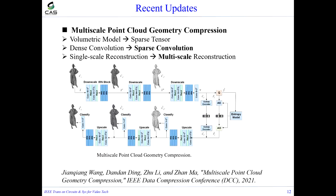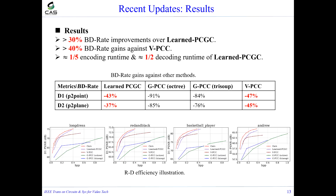Recently, we updated the learned PCGC and proposed a better method called multi-scale PCGC, accepted at the Data Compression Conference. We made two important improvements. First, the point cloud is represented by a sparse tensor rather than a redundant volumetric model, and dense convolution is replaced by sparse convolution, so we only process occupied voxels, which is more efficient. Second, single-scale reconstruction is updated to multi-scale reconstruction, further improving efficiency. The new method achieves more than 30% BD-rate improvement over learned PCGC, outperforms state-of-the-art VPCC with more than 40% BD-rate gains, and requires less memory and runtime.